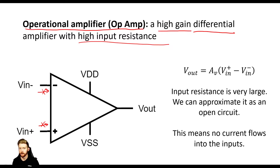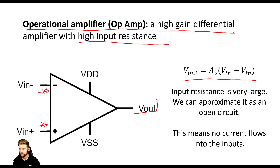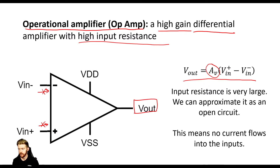Some very tiny microscopic current will flow in a realistic situation, but it's so small that it won't impact our analysis. So we're going to approximate it as an open circuit and assume no current flows into the input terminals. Our transfer function tells us how the output signal Vout is related to our input signals VN+ and VN-. Vout is equal to AV times (VN+ minus VN-) — that's the differential signal times the voltage gain AV. So Vout is an amplified version of the difference between the two inputs.